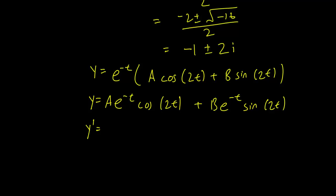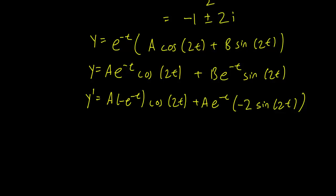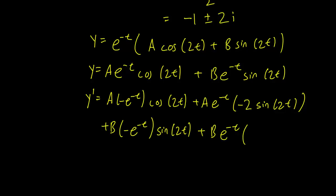We are going to have to do the product rule on both terms. For the a term: the derivative of e^{-t} gives minus e^{-t} cosine 2t, and then leaving e^{-t} constant and differentiating cosine 2t gives minus 2 e^{-t} sine 2t. For the b term: the derivative of e^{-t} gives minus e^{-t} sine 2t, and leaving e^{-t} and differentiating sine 2t gives plus 2 e^{-t} cosine 2t.